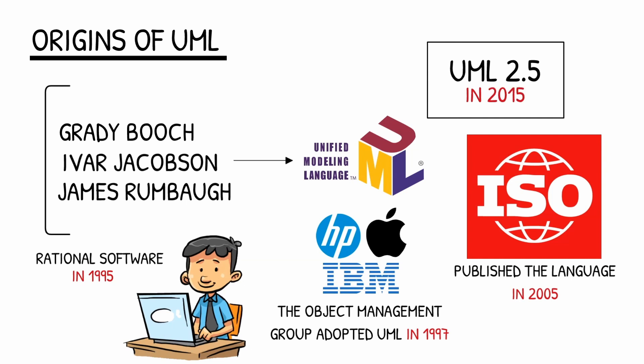Today, UML diagrams are less popular because many software teams now work in an agile environment, but there are certainly reasons to use them. UML diagramming enables teammates to consistently document and communicate ideas, and this type of clear communication keeps everyone on track.